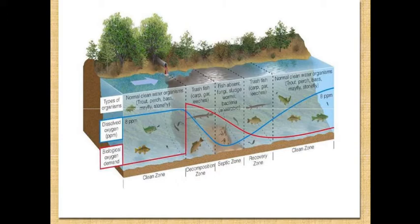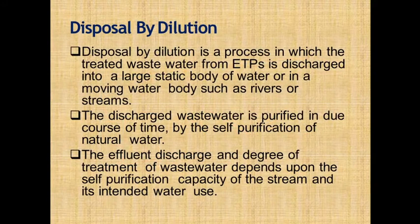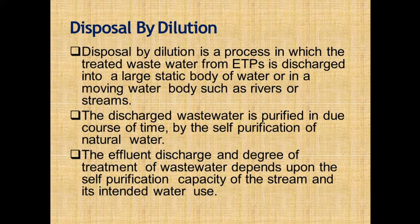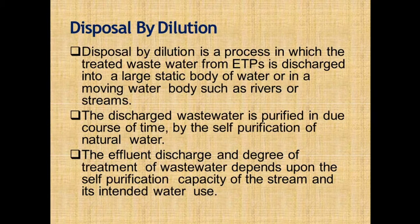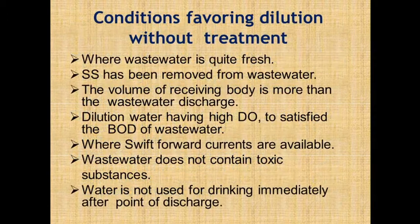Disposal by dilution is the process in which treated wastewater from an effluent treatment plant (ETP) is discharged into a larger static or moving water body such as a river or stream. The discharged wastewater is purified over time by the self-purification of natural water. The degree of treatment required depends upon the self-purification capacity upstream and the intended water use.